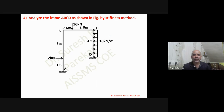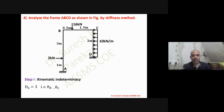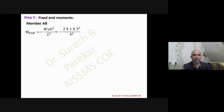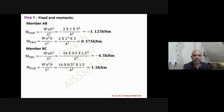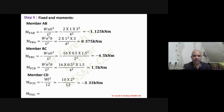Problem 4: analyze frame ABCD by the stiffness method. Kinematic indeterminacy is three. These problems with large matrices involve intensive calculation in both formulation and slope deflection equations. Fixed end moments: MF_AB = minus 1.125, MF_BA = 0.375 kN·m; MF_BC and MF_CB as computed; MF_CD = minus 3.33, MF_DC = 3.33 kN·m.